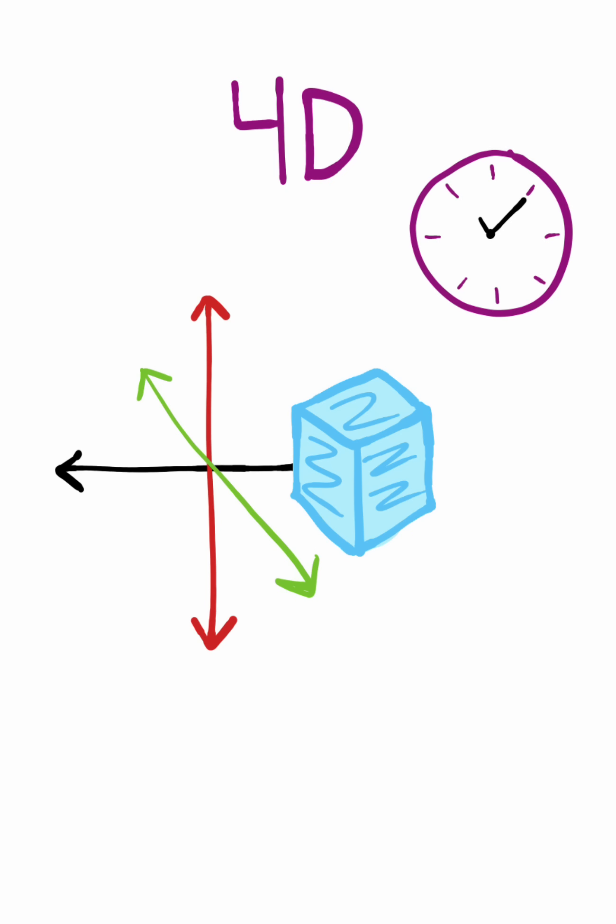Now we can also add a fourth dimension of time, which tells us how these shapes will evolve. At this point, how exactly could we get to a seven-dimensional universe?